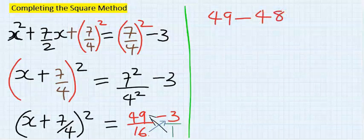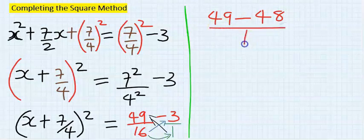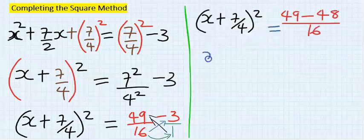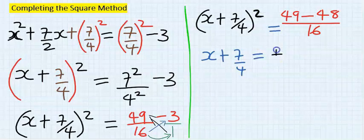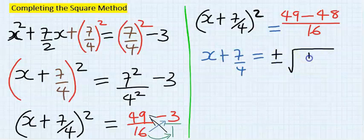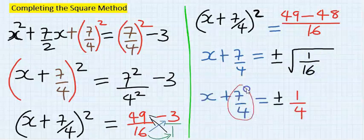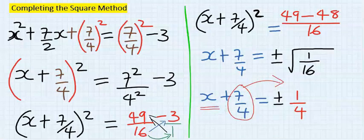Next, for x plus seven over four squared equal to 1 over 16: if the square moves to the other side it becomes plus or minus the square root of 1 over 16.